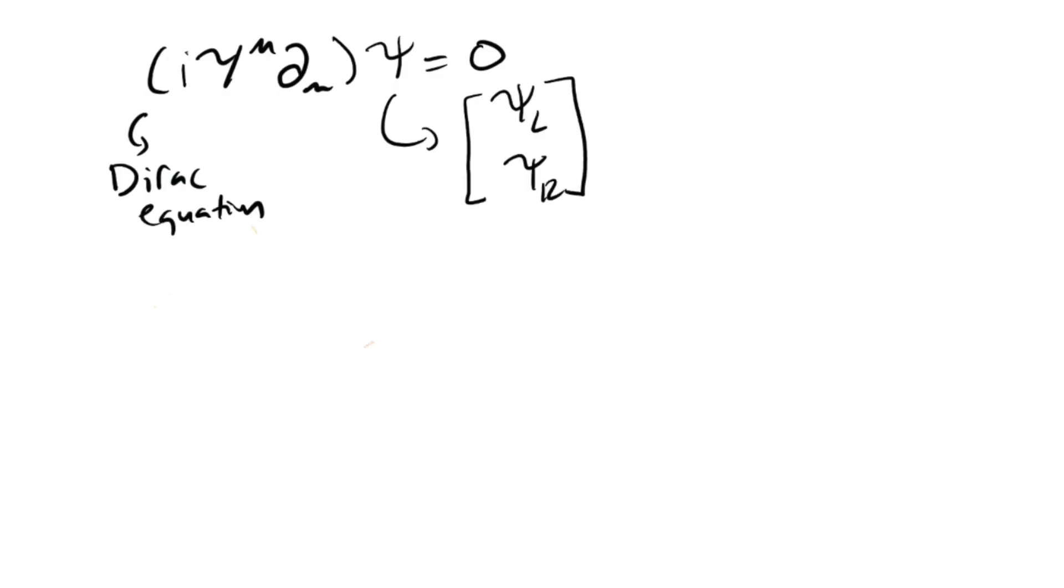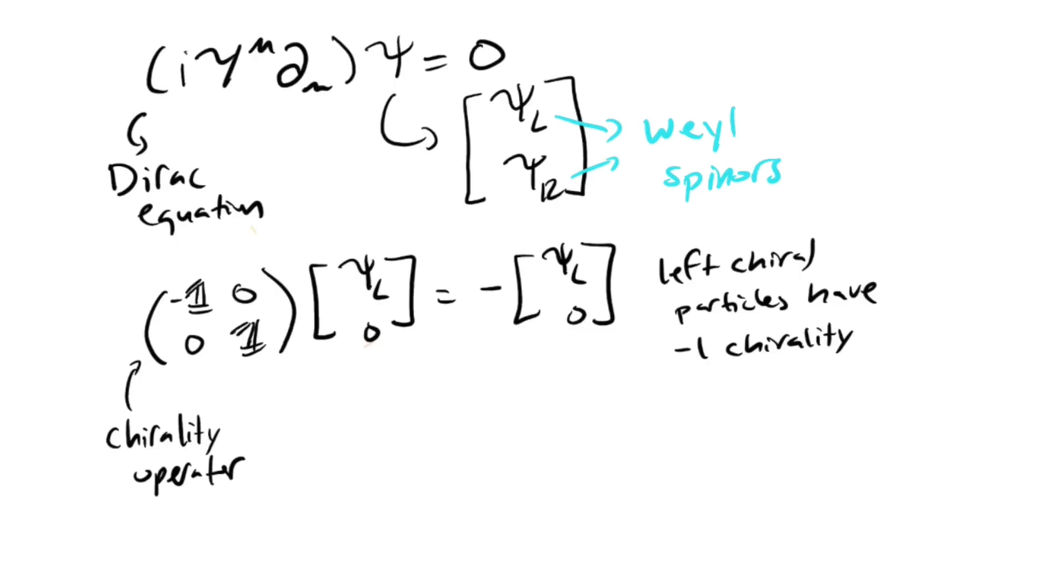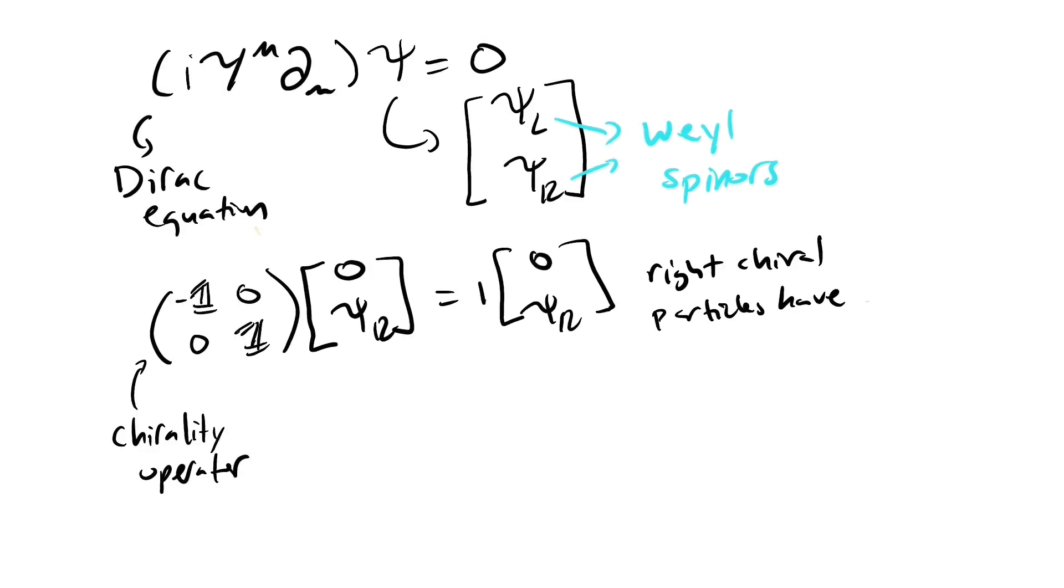Remember that these Dirac spinors have four components, and we can group these four components into a left chiral spinor and a right chiral spinor. We can define the chirality operator like this to define left-handed particles as having a chirality of minus one and right-handed particles as having a chirality of positive one.